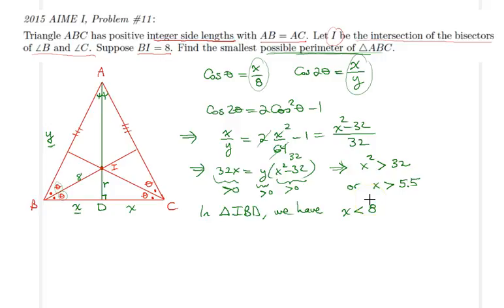But this already gives us some bounds for x itself. And furthermore, because we know that each side has integer measure, BC is an integer, meaning that x in this range can be either 6, 6.5, 7, or 7.5 only.